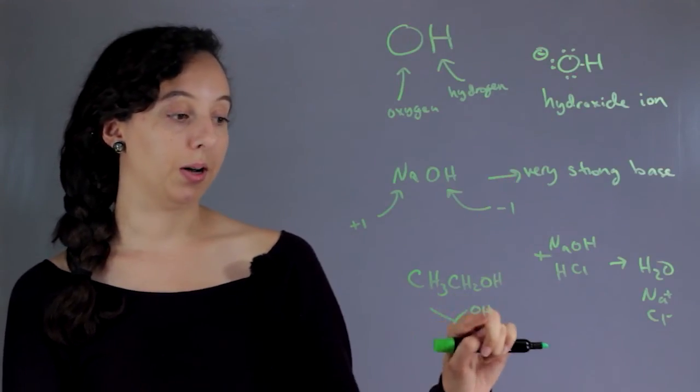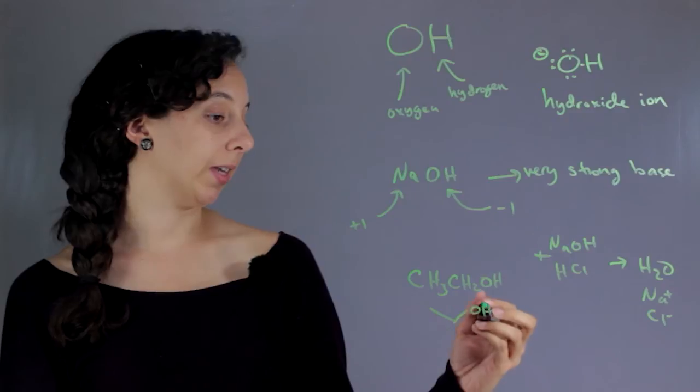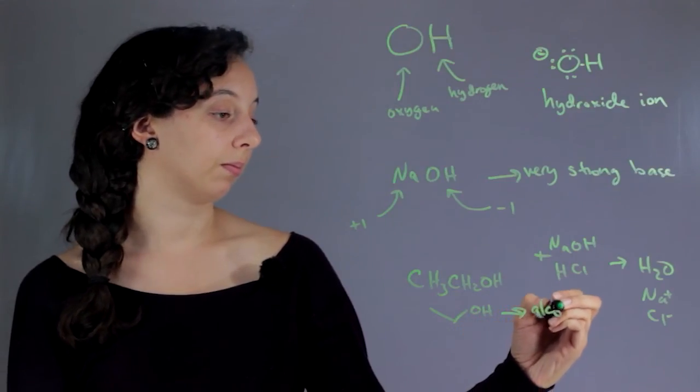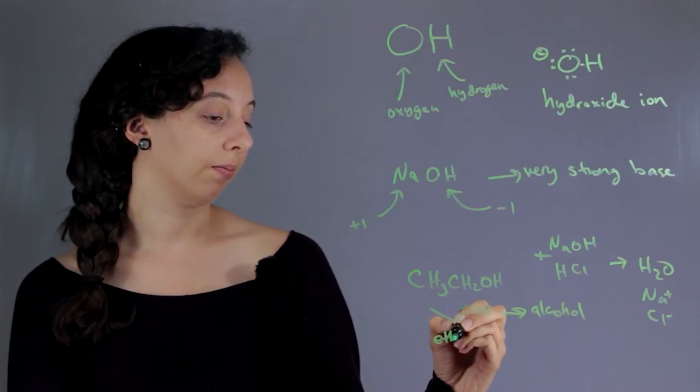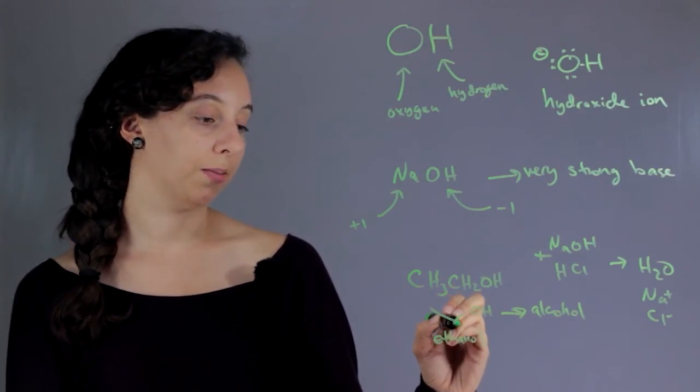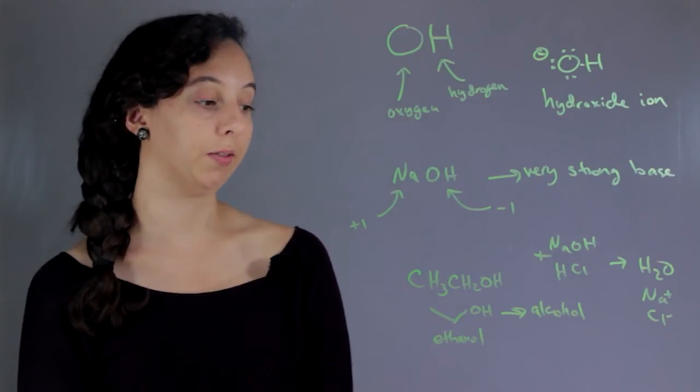This is covalently bonded to the carbon, so when it's like this, it's called an alcohol. In this case, it's ethanol because you have two carbons—an ethane group—and then you have an alcohol.